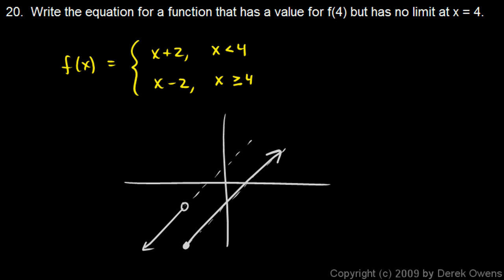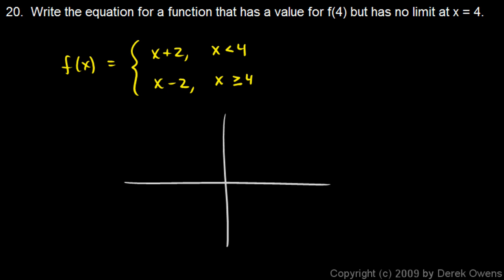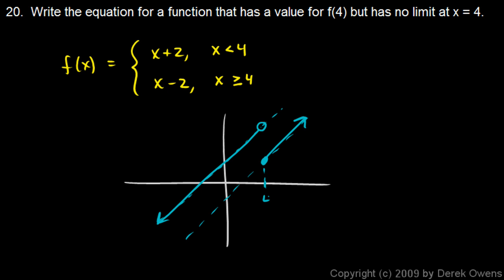So that's what our function looks like. Here's x equals 4, and it has a value — it's defined right there. At x equals 4, it has a certain y value. But it has no limit, because coming from the left and the right, we approach different y values. Again, this is only one possible answer to this question.